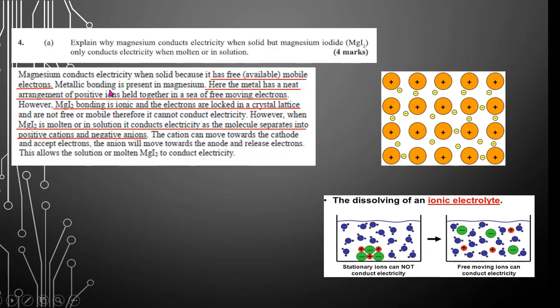Metallic bonding is present in magnesium. Here, the metal has a neat arrangement of positive ions held together in a sea of free-moving electrons. Always remember that, metallic bonding has a sea of free-moving electrons.